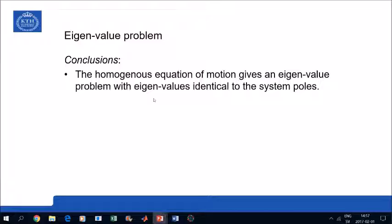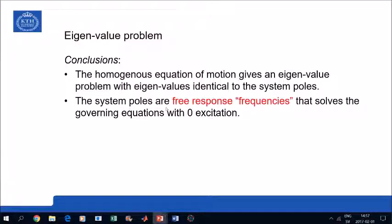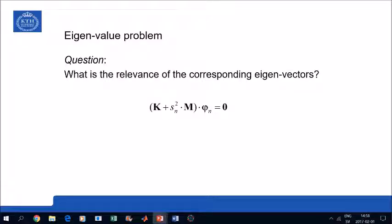So we can conclude now that the homogeneous equation of motion will give an eigenvalue problem with eigenvalues that are identical to the system poles. Also the system poles, they are the free response frequencies that is able to solve the governing equations with zero excitation. So one can then ask, since we can find non-trivial solutions, then we can of course find the solution vector to our system.